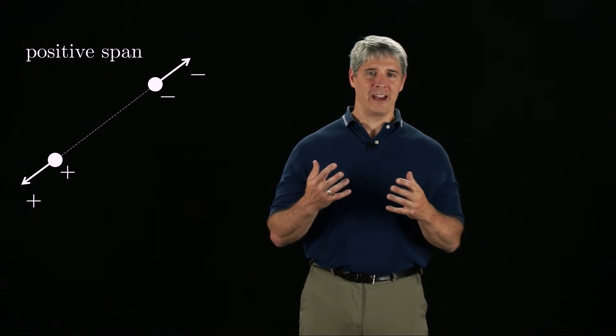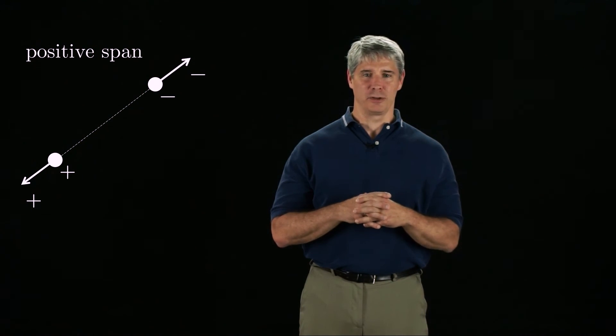In other words, the positive span of two rotation centers of opposite signs consists of a ray of positive rotation centers, a ray of negative rotation centers, and a point at infinity corresponding to a pure translation.